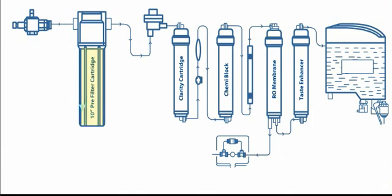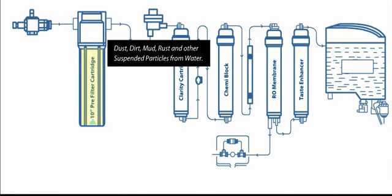Water first passes through the 10-inch pre-filter cartridge. This cartridge removes dust, dirt, mud, rust, and other suspended particles from water.